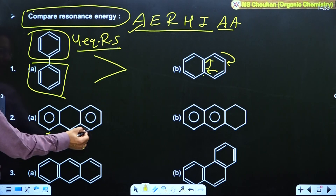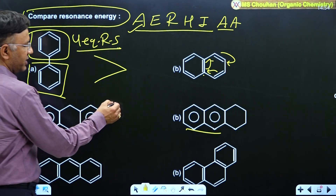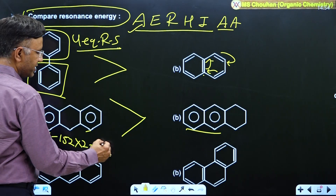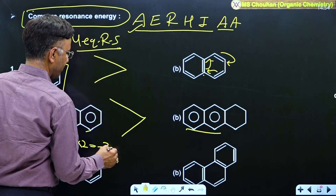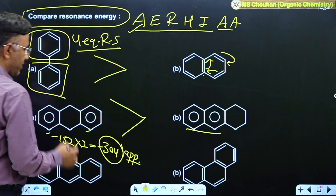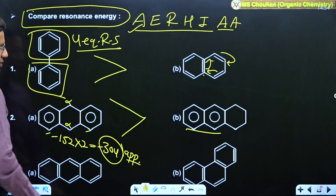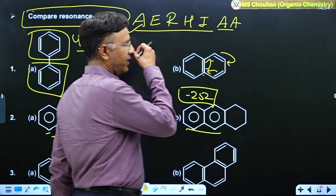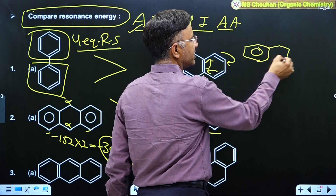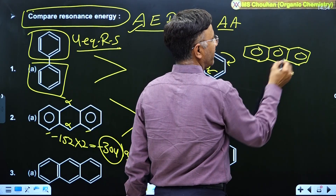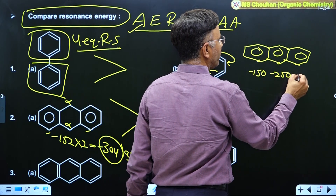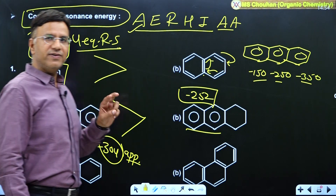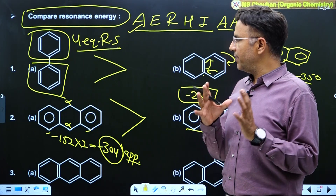In the second example: two individual phenyl rings versus naphthalene — which has more resonance energy? Two benzene rings are more stable than naphthalene. The resonance energy of one benzene is 152 kilojoule per mole; two benzene rings give roughly 304. Naphthalene's resonance energy is approximately 252 to 255. You can remember it this way: benzene is roughly 150, naphthalene roughly 250, anthracene roughly 350. Therefore two individual benzene rings are more stable than naphthalene.